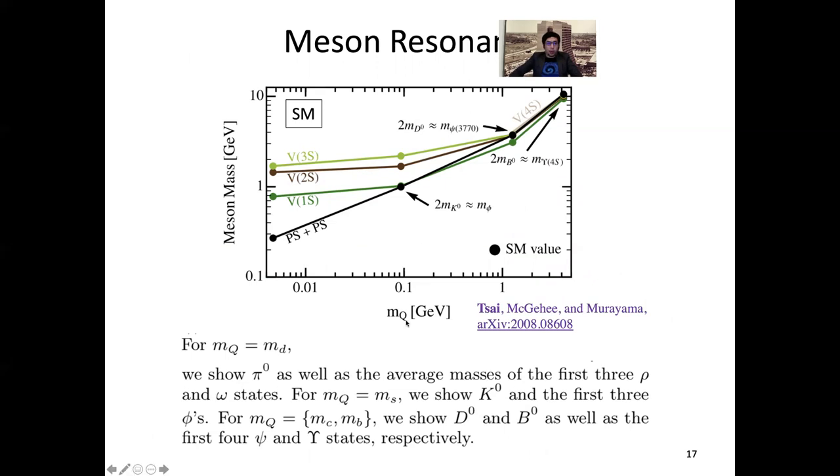This plot is completely standard model. These black dots are pseudoscalar mesons. Two times the pseudoscalar meson mass can match the vector meson mass in these locations. If you make your quark heavier, so you have a heavy and light quark, if you make your heavy quark even heavier, it's easier to hit the resonance. These are the mesonic spectrum, and you can understand this spectrum. All these dots are actual standard model data. These are not dark matter, these are all standard model.